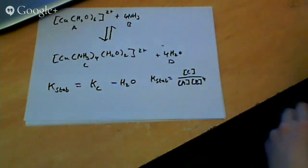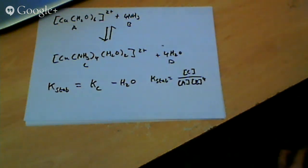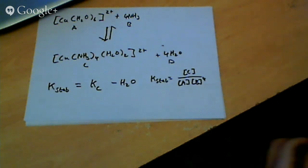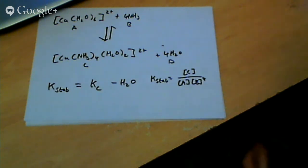A photosystem is kind of like a funnel in the thylakoid membrane which can absorb light and has chlorophyll in it, essentially.